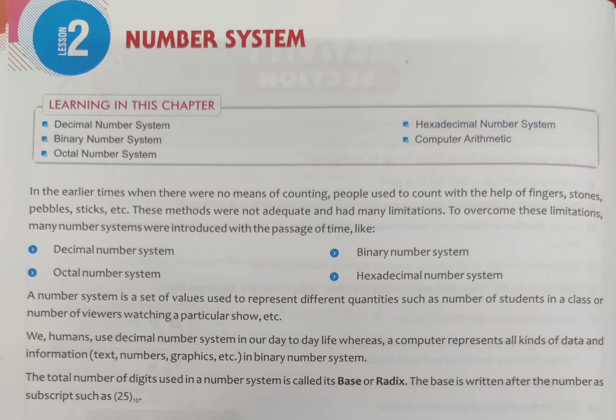The total number of digits used in a number system is called its base or radix. The base is written after the number as a subscript, such as 25 base 10.